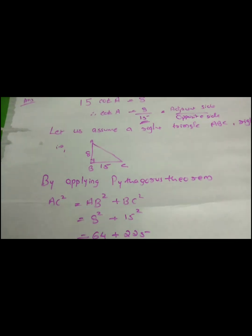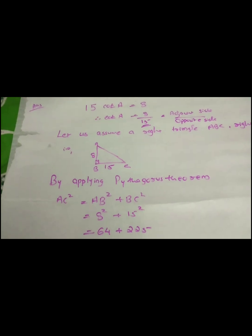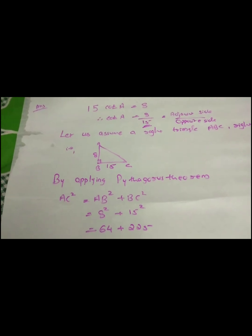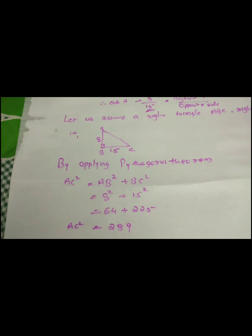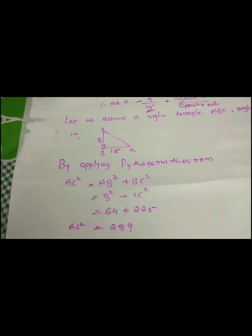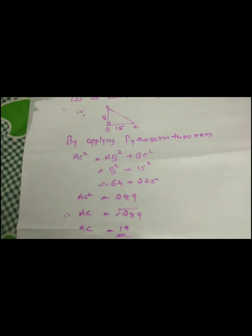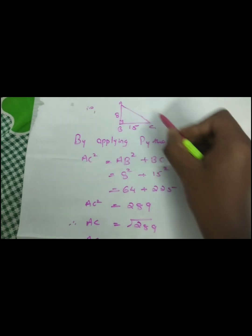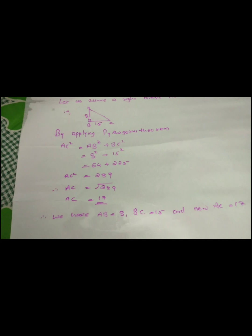8 squared plus 15 squared: 8 squared is 64, 15 squared is 225. We add them: AC squared is equal to 289. So AC is the square root of 289, which is equal to 17. We now have all three sides of the right triangle: AB = 8, BC = 15, AC = 17.